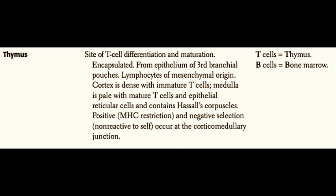Positive selection is MHC restriction — it's when T cells find out if they can recognize MHC. Negative selection is when T cells find out if they're reactive or non-reactive to self. Only T cells that recognize MHC and are non-reactive to self will make it through thymus education. Remember: both T and B cells are born in the bone marrow, but T cells mature in the thymus (T and T), and B cells mature in the bone marrow (B and B).